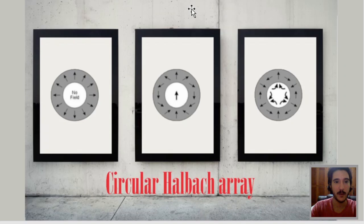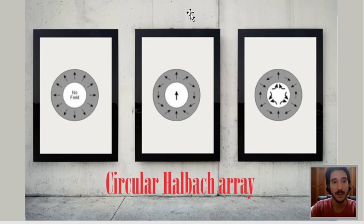A circular Halbach array is a magnetized circle, or in 3D dimension, a cylinder. These structures would be created from an infinite length cylinder of magnetic material, with the direction of the magnetization continuously varying throughout it. That's quite hard to achieve both in real life and simulation, so we would like to change that a little bit in order to perform a good geometry in the software.